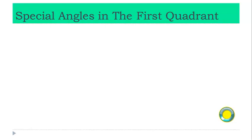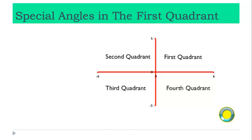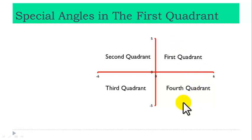Special Angles in the First Quadrant. We know that a plane is usually divided into four quadrants. This is the first quadrant, second quadrant, third quadrant, and fourth quadrant. We also know that positive angles are usually measured in anti-clockwise direction. Thus, if a line segment is rotated in this direction, a positive angle is formed. But if a line segment is rotated in this direction, a negative angle is formed.